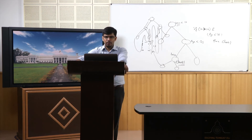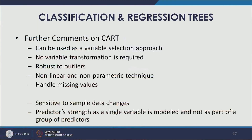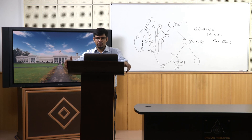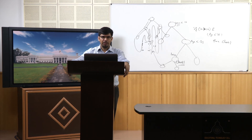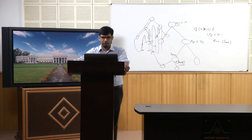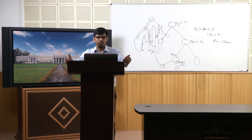The recursive partitioning approach captures predictor strength as single variables rather than as a group of predictors. There could be a set of predictors which together give better performance using other techniques. CART also may not fit linear structures or diagonal relationships well — it works best when vertical and horizontal separations exist in the data.